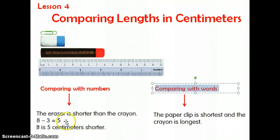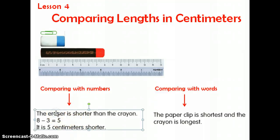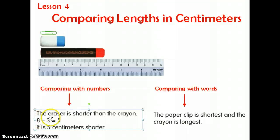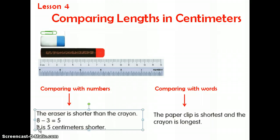Here in this picture, we're comparing two things — the eraser and the crayon. As you can tell, the crayon is 8 centimeters and the eraser is 3 centimeters. So when we're comparing two lengths, we can do a subtraction sentence. We have 8 centimeters for the crayon minus 3 centimeters for the eraser, and the difference is 5. So we would say the eraser is 5 centimeters shorter, or you can say the crayon is 5 centimeters longer.